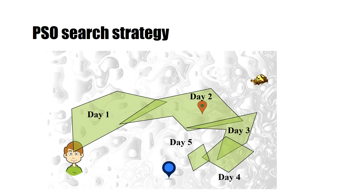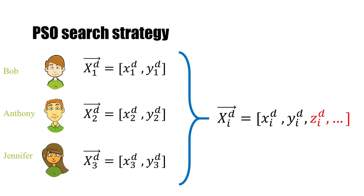Now you know the concept of PSO — let's learn its mathematical model. We will first start with the mathematical model of our analogy, and then look at the formal equations of the particle swarm optimization algorithm. Each team member defines its position by a pair of x and y, stored in a vector called X. So X_i_d shows the position of the i-th team member on day d. To move in an n-dimensional search space, we can add more variables in the vector X.